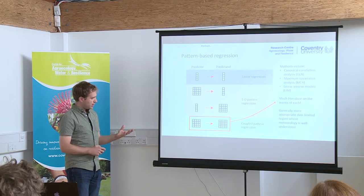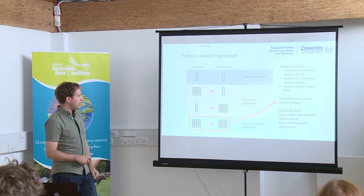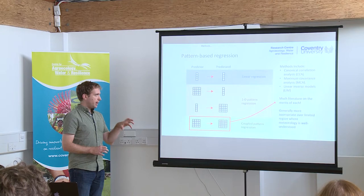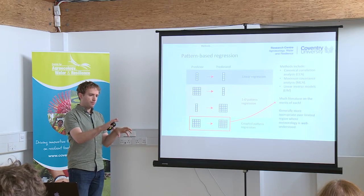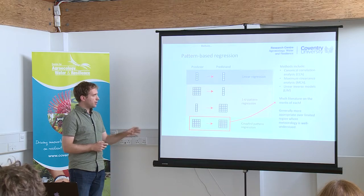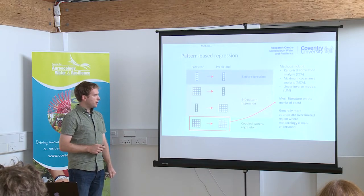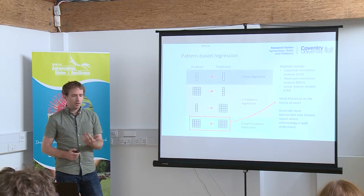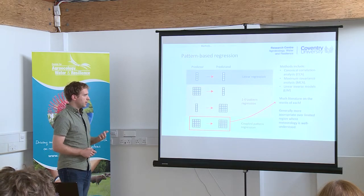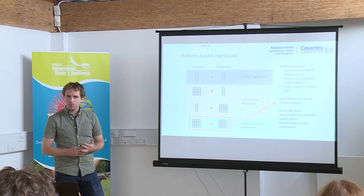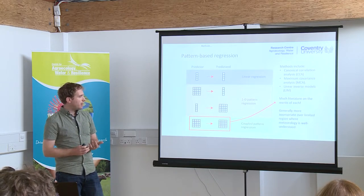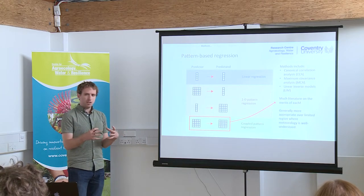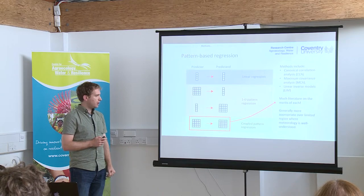An alternative method is coupled pattern regression, where you're matching a pattern of variability in one location with a pattern in another. There are lots of methods that can be used, including canonical correlation analysis, maximum covariance analysis, and linear inverse modelling. These methods are generally more appropriate over a limited region where we understand the meteorology quite well to start with.